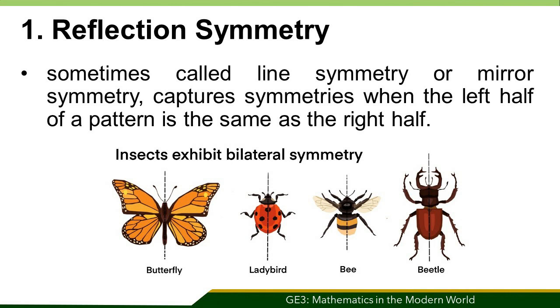So what is reflection symmetry? It is sometimes called line symmetry or mirror symmetry. It captures symmetries when the left half of a pattern is the same as the right half.